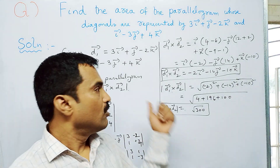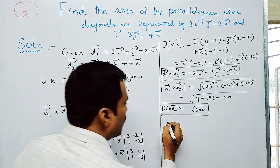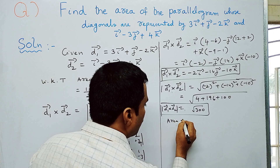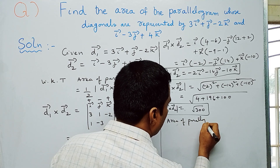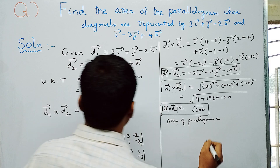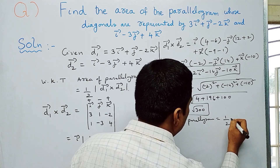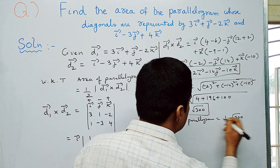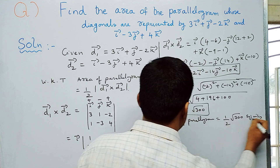Now apply the formula: area of parallelogram = ½ × √300. Since it is an area, we represent it with the square root. So the area of the parallelogram is ½√300 square units.